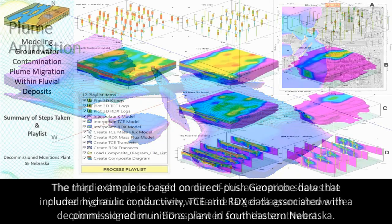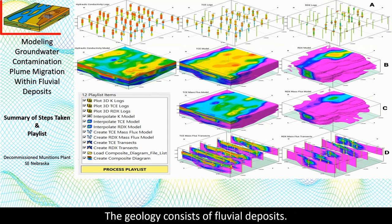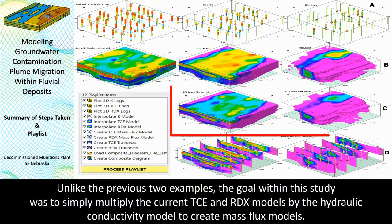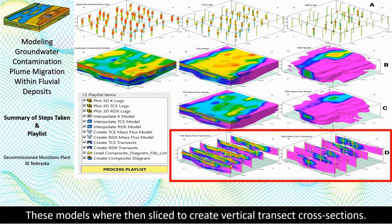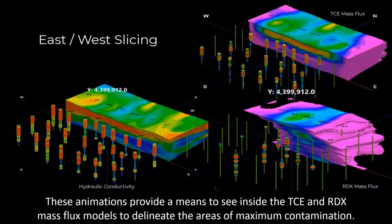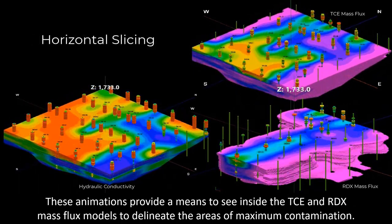The third example is based on direct-push geoprobe data that included hydraulic conductivity, TCE, and RDX data associated with a decommissioned munitions plant in southeastern Nebraska. The geology consists of fluvial deposits. Unlike the previous two examples, the goal within this study was to simply multiply the current TCE and RDX models by the hydraulic conductivity model to create mass-flux models. These models were then sliced to create vertical transect cross-sections. These animations provide a means to see inside the TCE and RDX mass-flux models to delineate the areas of maximum contamination.